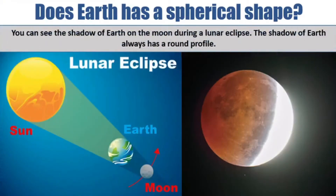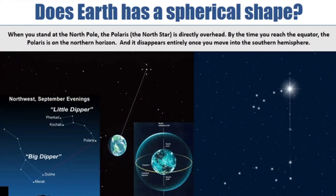The second reason: you can see the shadow of Earth on the moon during a lunar eclipse. The shadow of Earth always has a round profile. When you stand at the North Pole, the Polaris is directly overhead. By the time you reach the equator, the Polaris is on the northern horizon, and it disappears entirely once you move into the southern hemisphere.